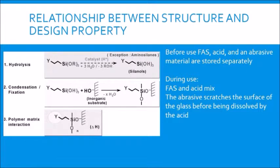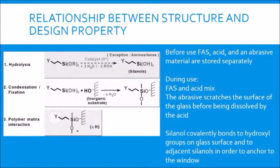Meanwhile, the rubbing action causes the abrasive to increase the surface area of the glass, as well as remove undesirable surface compounds like calcium and tin ions that get in the way of FAS binding to the glass. The aluminum oxide abrasive is also dissolved by the acid slowly, which prevents it from contaminating the final product. Through a spontaneous dehydration reaction, silanol forms covalent bonds with hydroxyl groups on the surface of the glass, as well as adjacent silanol molecules, creating a polymer complex that is solidly anchored to the glass.